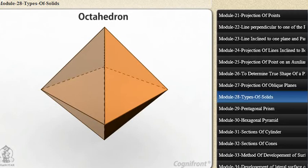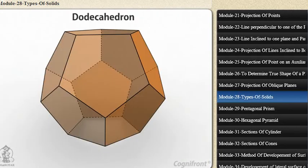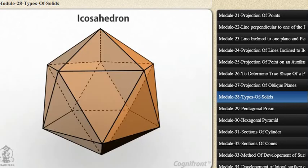Four, dodecahedron. It has twelve equal and regular pentagons as faces. Five, icosahedron. It has twenty faces, all equal equilateral triangles.